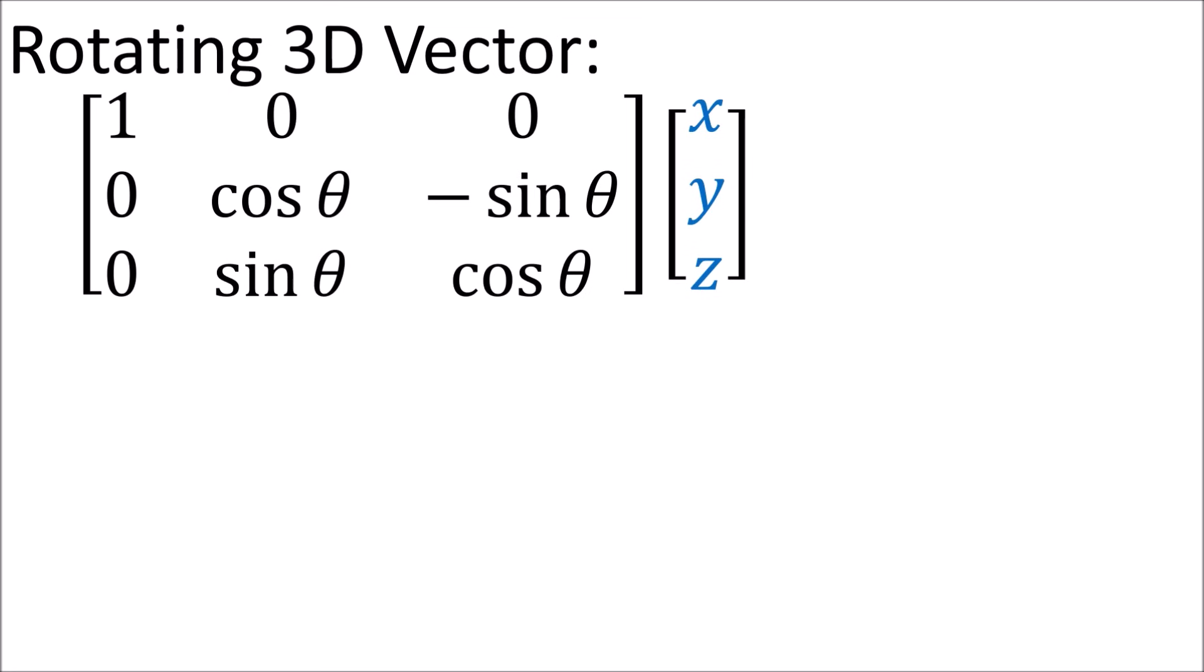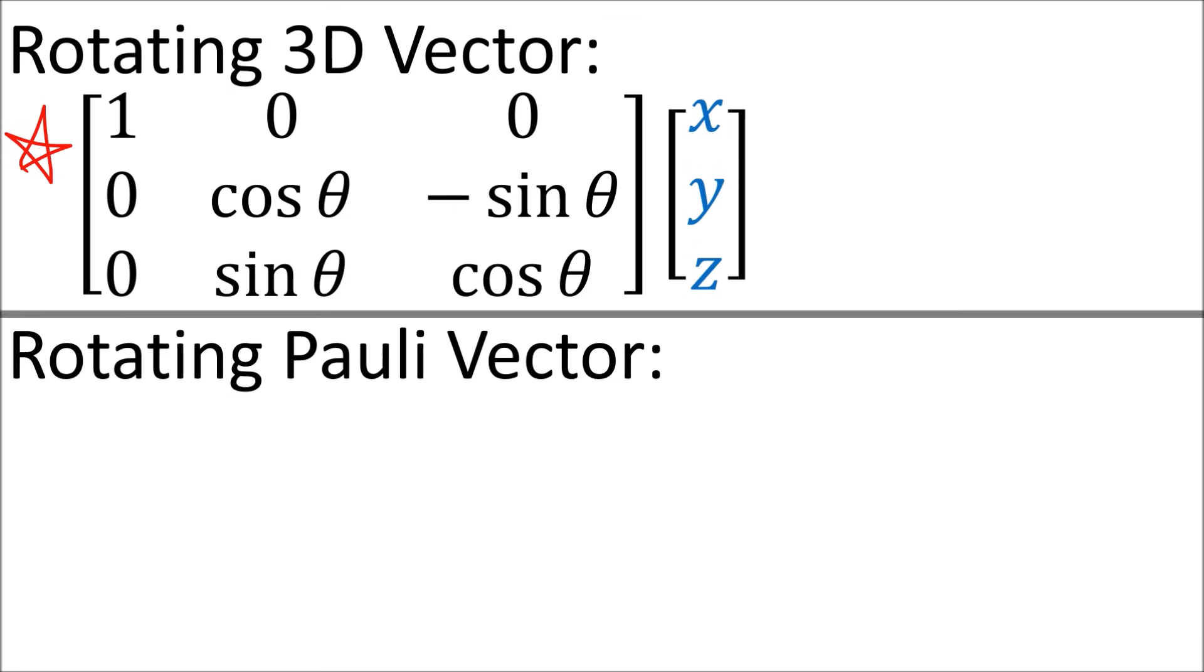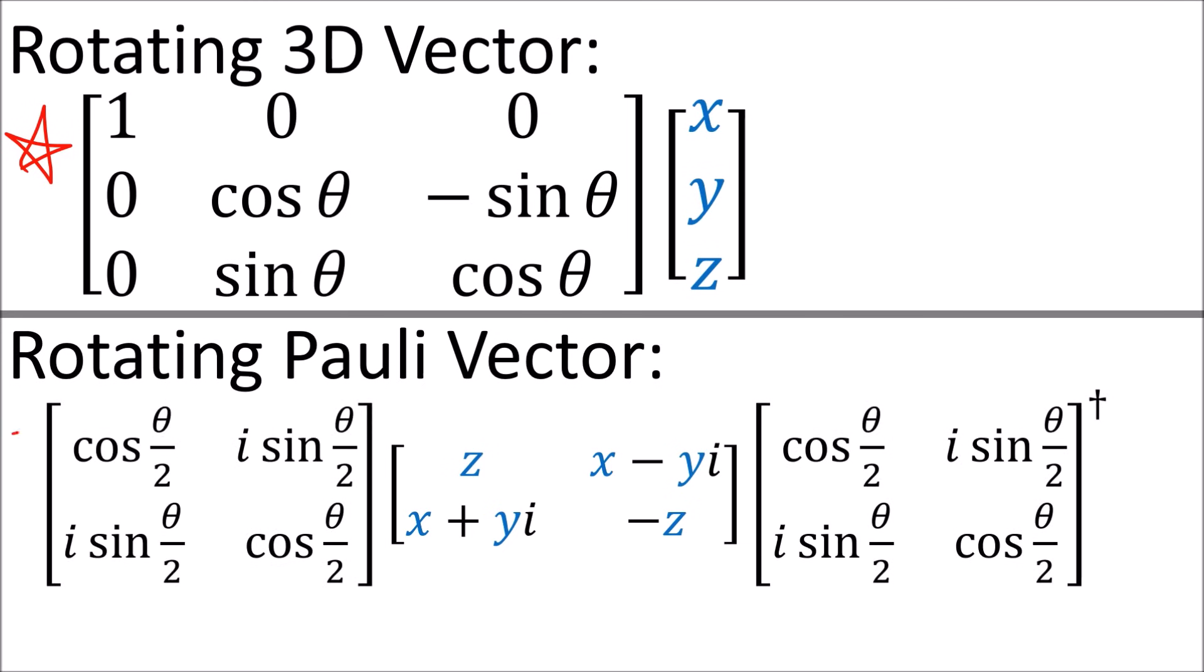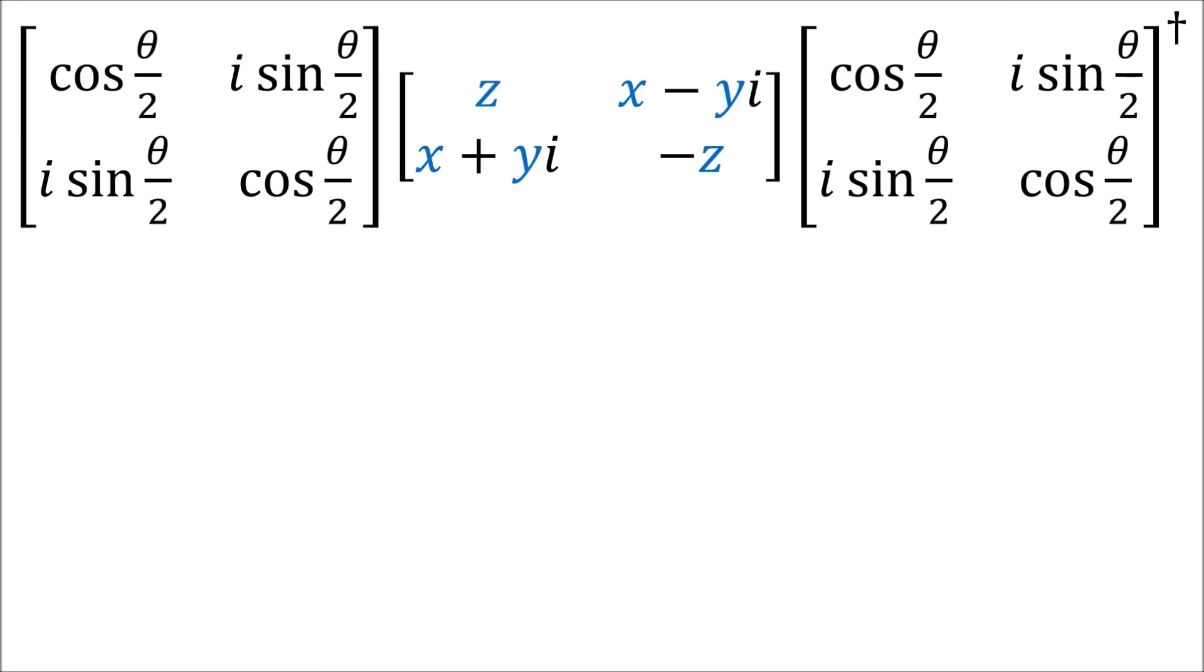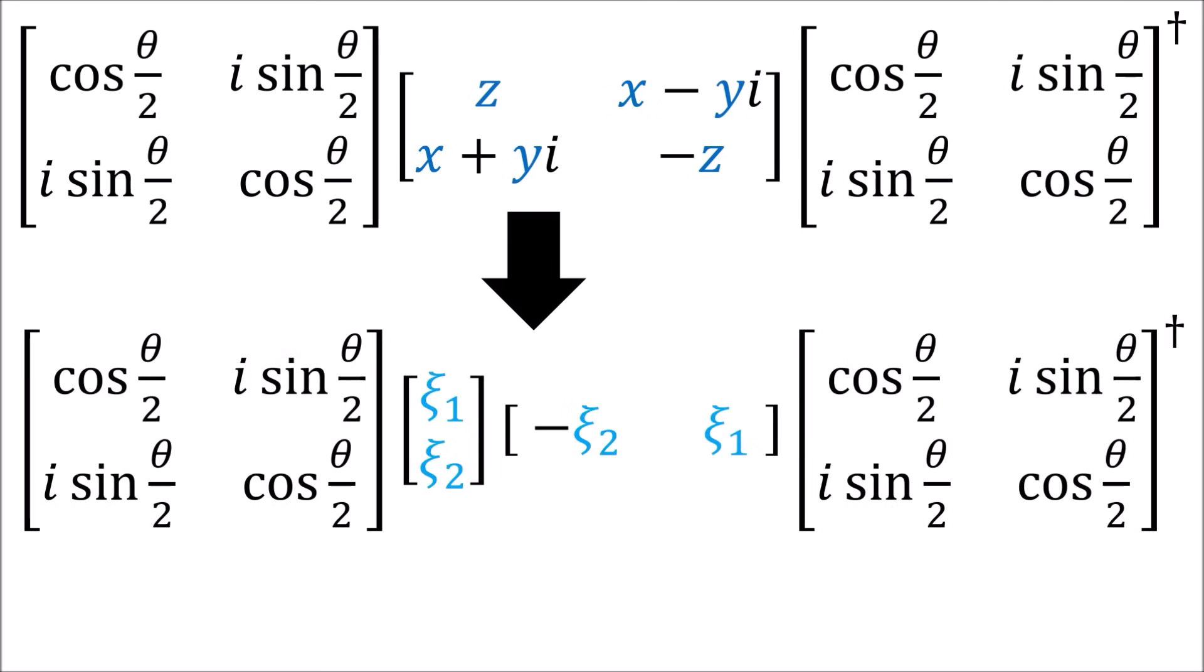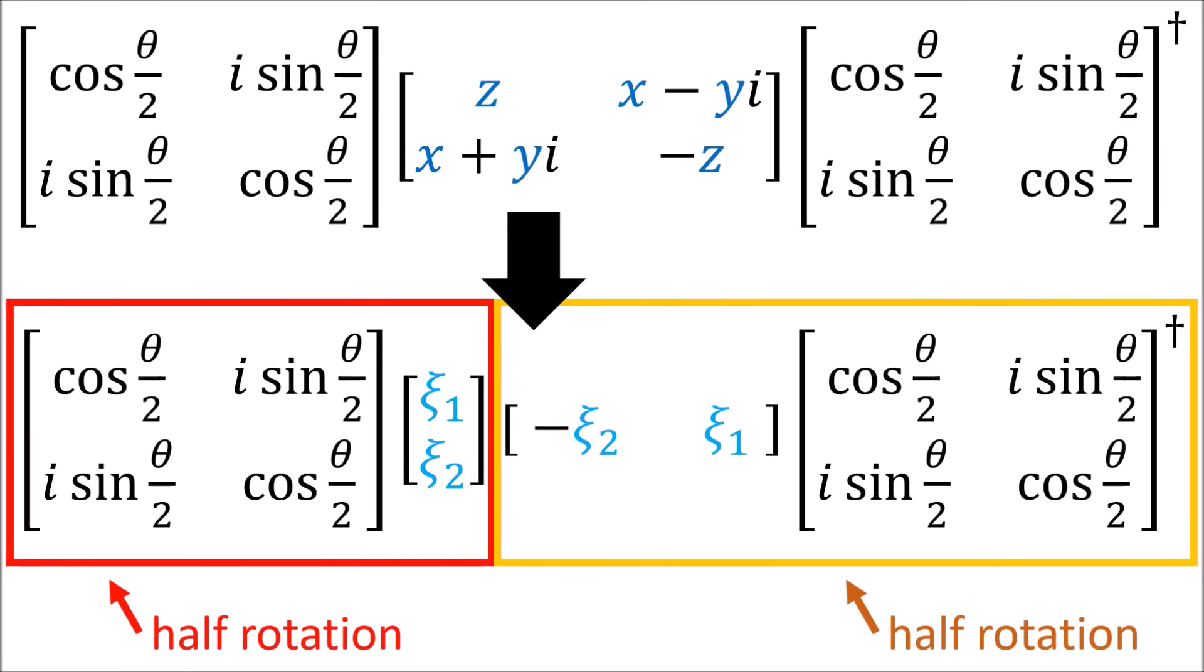Now when we rotate a 3D vector, we usually use a 3x3 rotation matrix like this. But when we rewrite our 3D vector as a 2x2 polyvector, rotating the x, y, and z components is instead done with a pair of rotation matrices, one on each side. Each matrix is responsible for half of the rotation. If we then factor our polyvector into a pair of polyspinors, notice that each spinor only gets one rotation matrix. So each spinor only rotates half as much as the vector does, just like we saw with quantum spin states and polarization states of light.